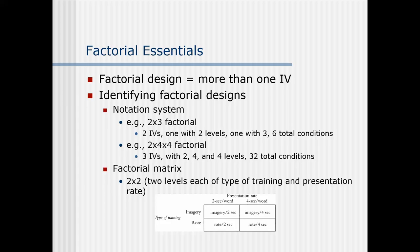We also need to introduce the factorial matrix, which is a graphical way of presenting factorial designs. Here we see a two-by-two: two levels of each type of training, and two levels of presentation rate. Presentation rate is either two seconds per word or four seconds per word. Type of training is imagery versus rote. In the cells of the factorial matrix, we just cross what's in the columns and what's in the rows. So in the first cell, the presentation rate is two seconds per word and the type of training is imagery — so subjects get the imagery instructions at two seconds per word.